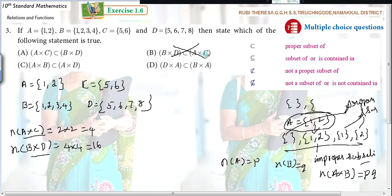So this can't be correct. This cannot be correct because B×D is bigger. Next, A×D and A×D. 2 times 4 is 8, 2 times 4 is 8. Both are same. But you have to check the elements, so that is also doubtful.